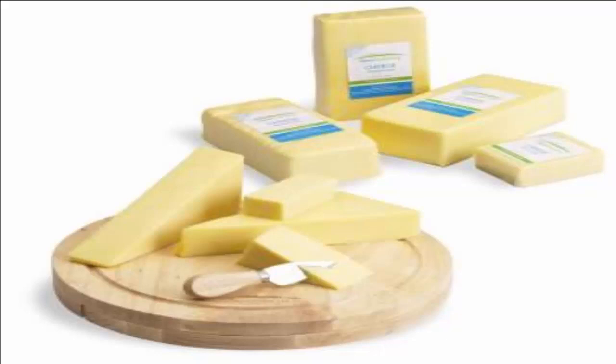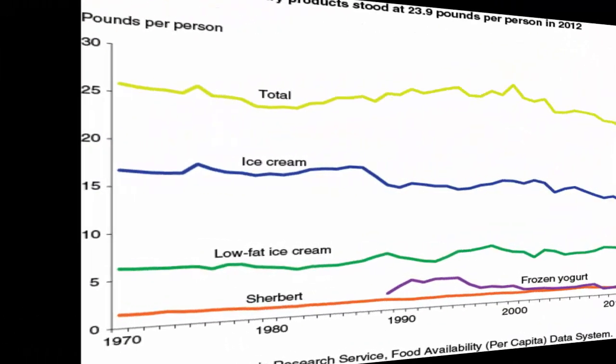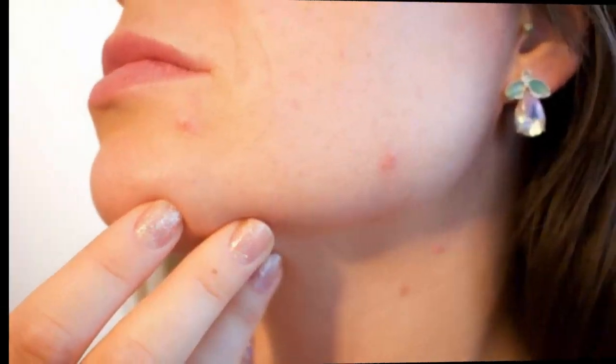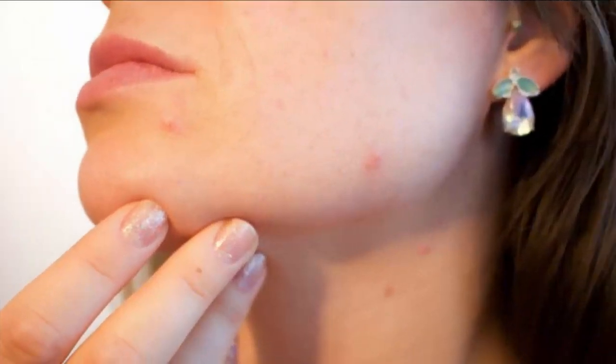Number four: consumption of dairy products. According to a study published by New York University, it has been observed that people who consume a high amount of dairy products like eggs, cottage cheese, or chicken are more prone to pimple outbreaks compared to their vegetarian counterparts. Dairy products tend to increase oil secretion from the skin pores, thereby leading to pimples.